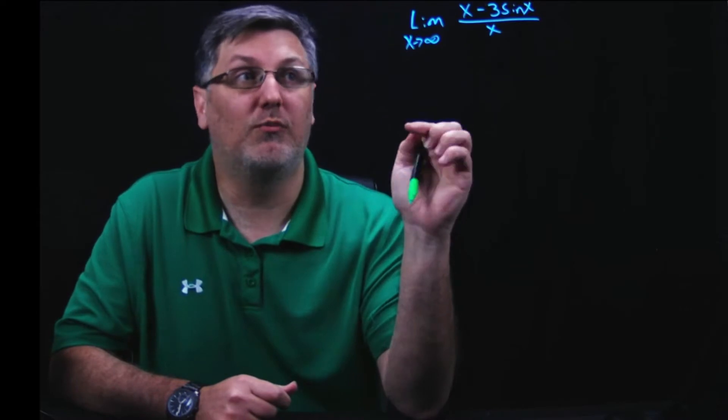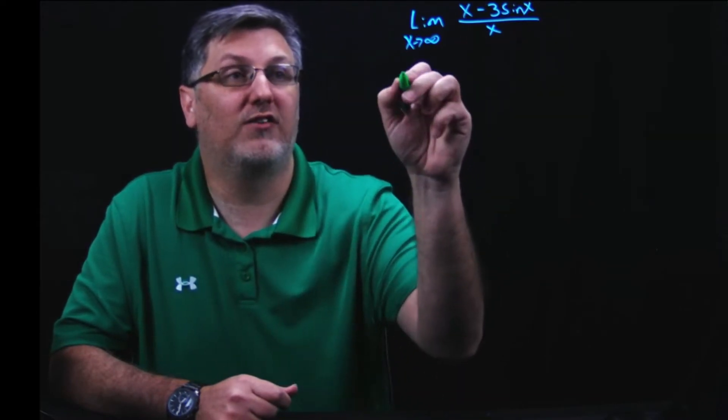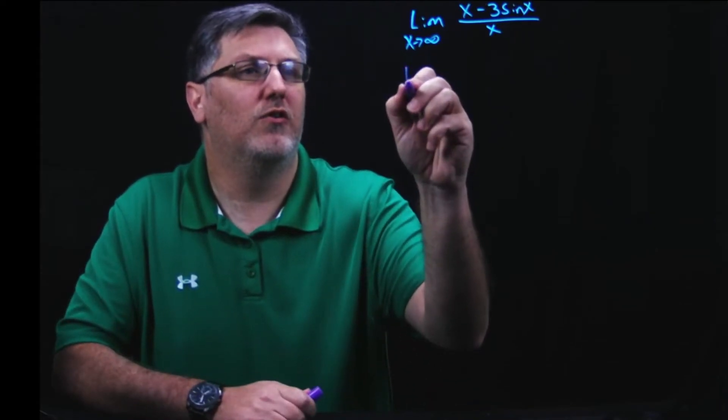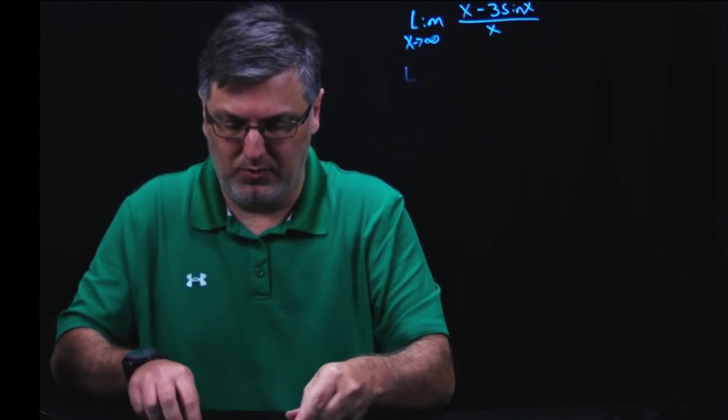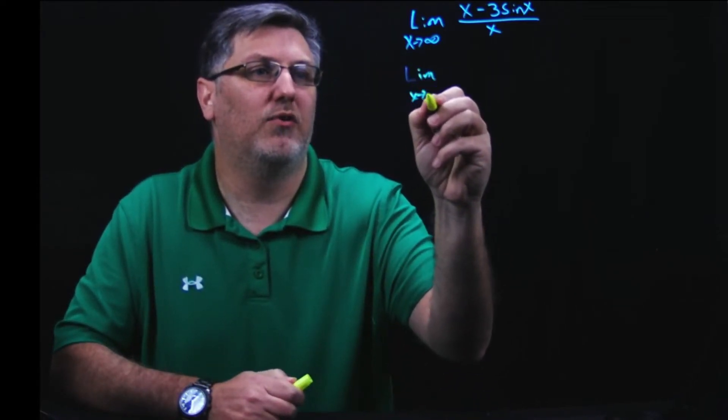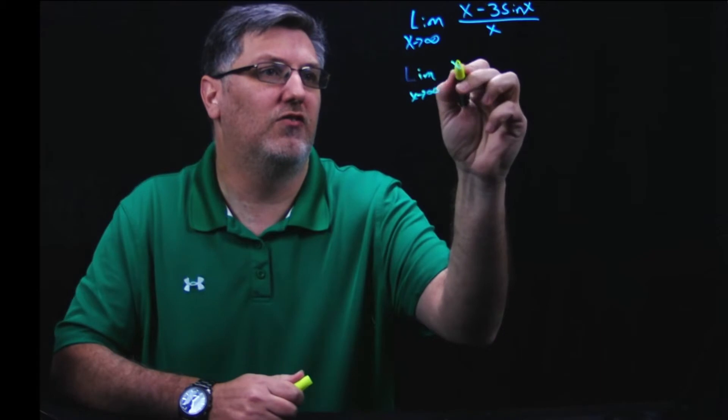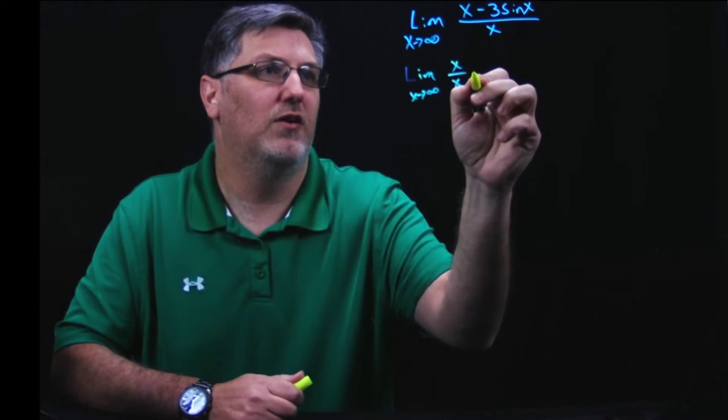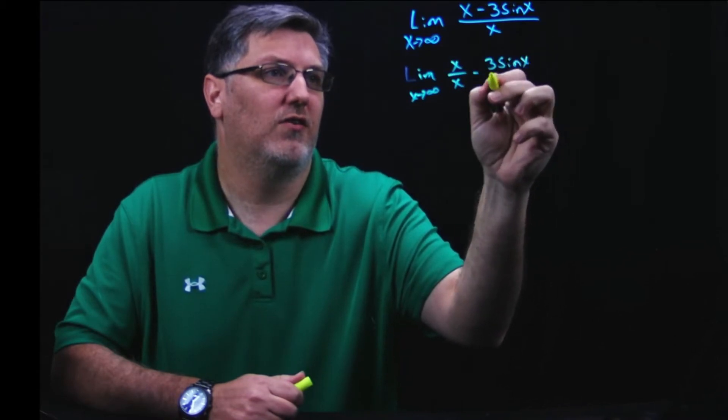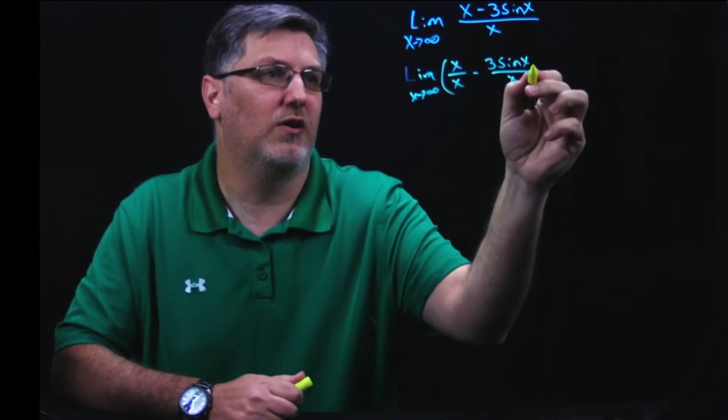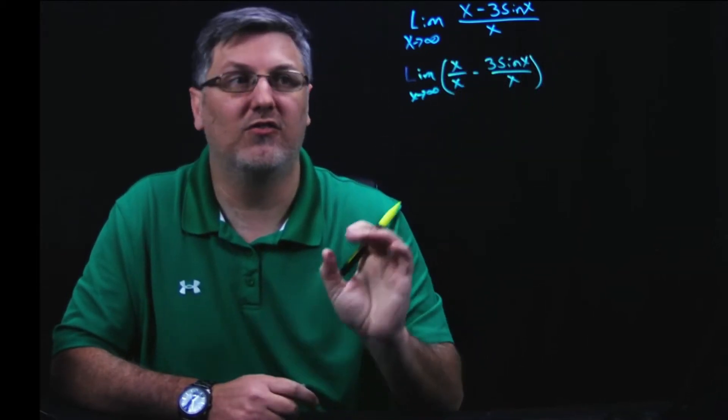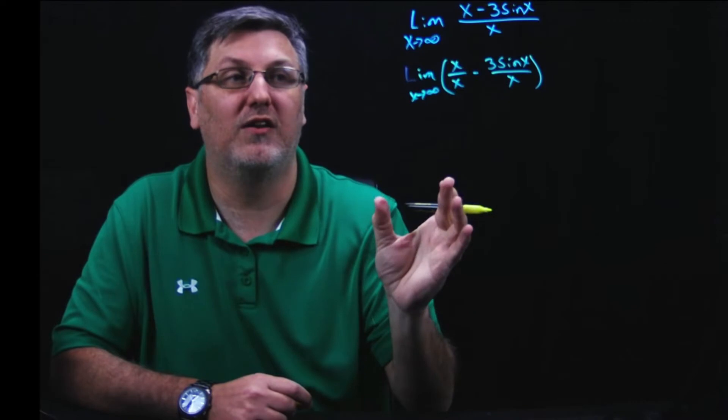The first thing I'm going to do is I'm going to split this up into its own two fractions. Let me change colors here. And we're going to do the limit. The limit as x approaches infinity of x over x minus 3 sine x over x. So all I did was split this up into two different fractions. And this is going to allow me to use some of my limit rules to kind of simplify this down.